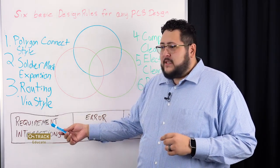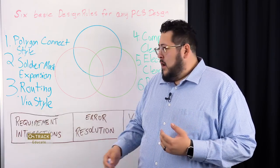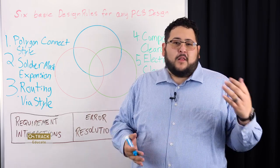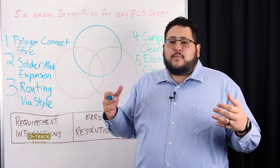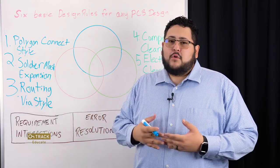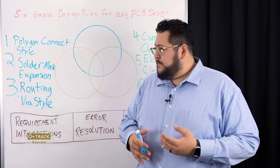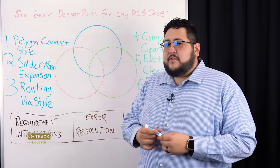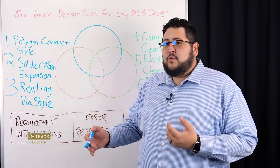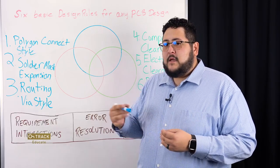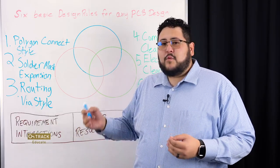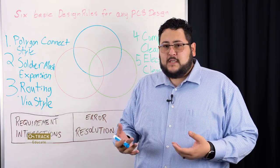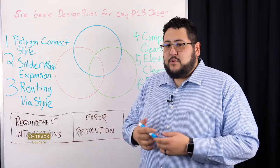The first thing that design rules help us deal with is looking at requirement interactions. All of our designs have a logical and physical side that need to be properly managed in order to create the perfect design. Design rules allow you to define a system to automate the checking of these requirements, giving you an interface between the logical and physical side so that you can actually produce a board.